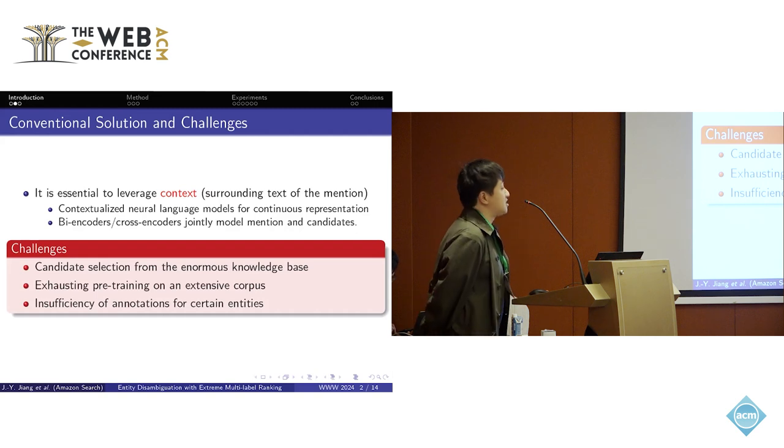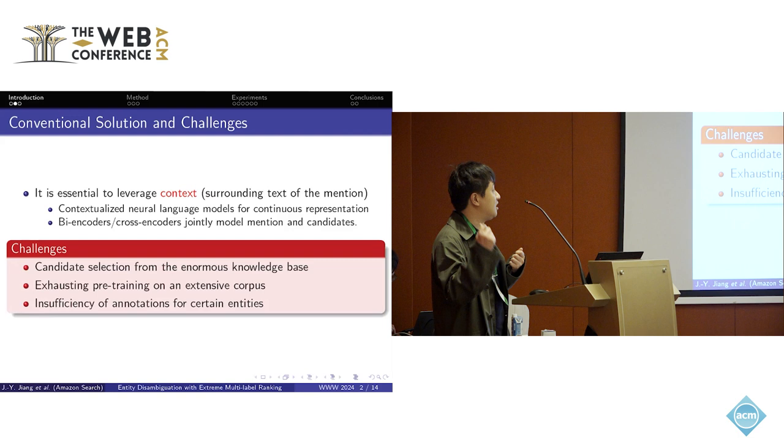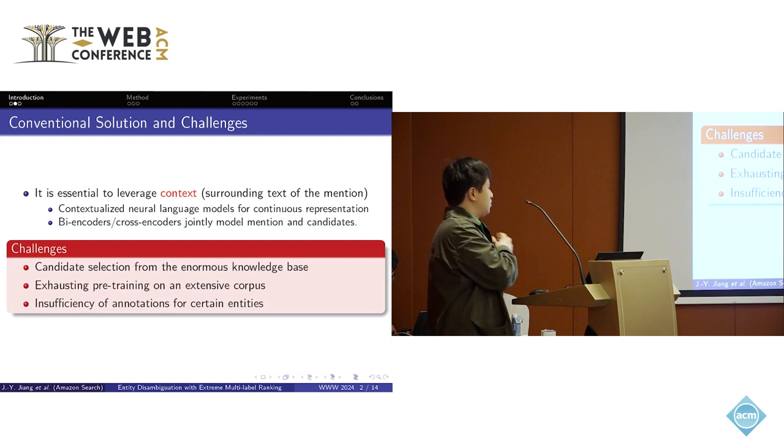But there are some huge challenges. First, the candidate selection from the enormous knowledge base is very hard, especially for the cross-encoder approach, which represents better capability to model the relations between the mention and candidates. It's very hard to select or model from billions or millions of entities in the knowledge base. Another challenge is about the computational time, because it would be very exhausting to pre-train on extensive corpus with large entities.